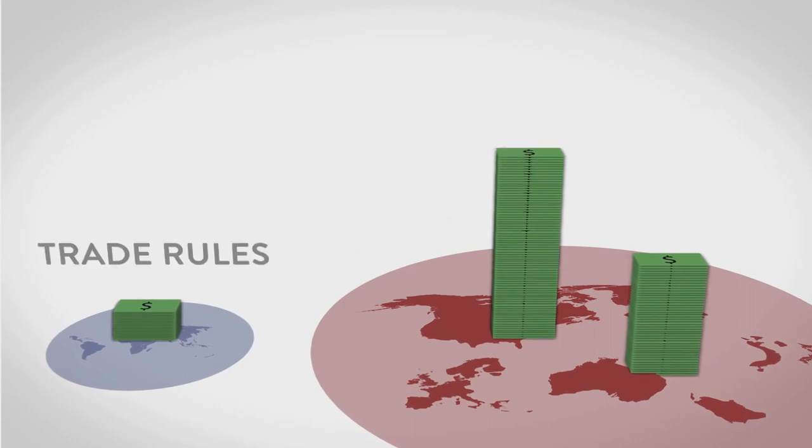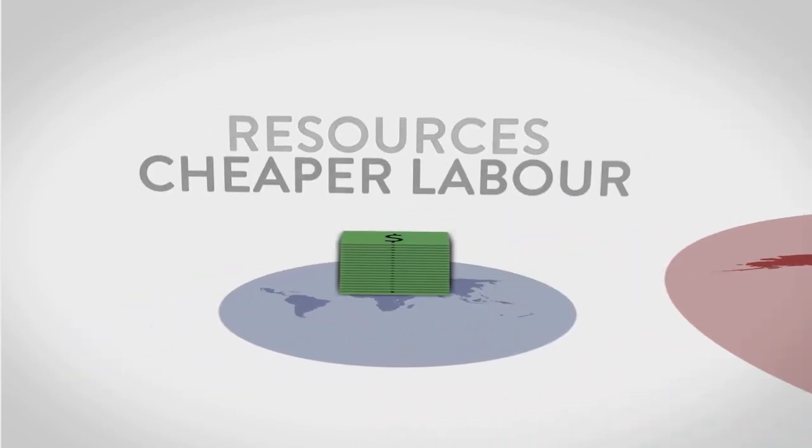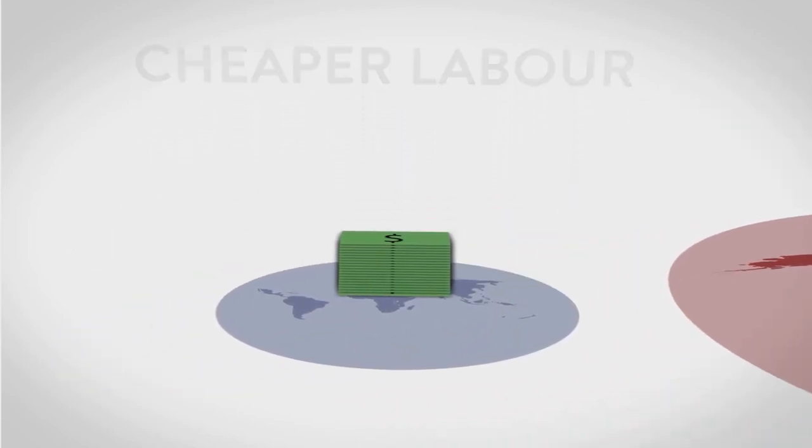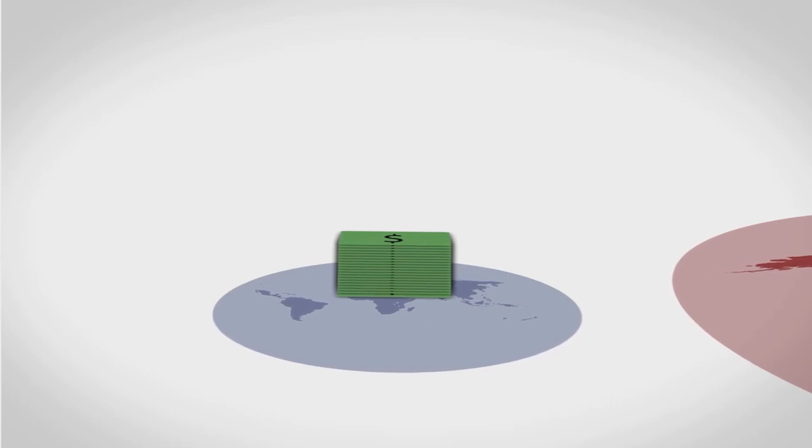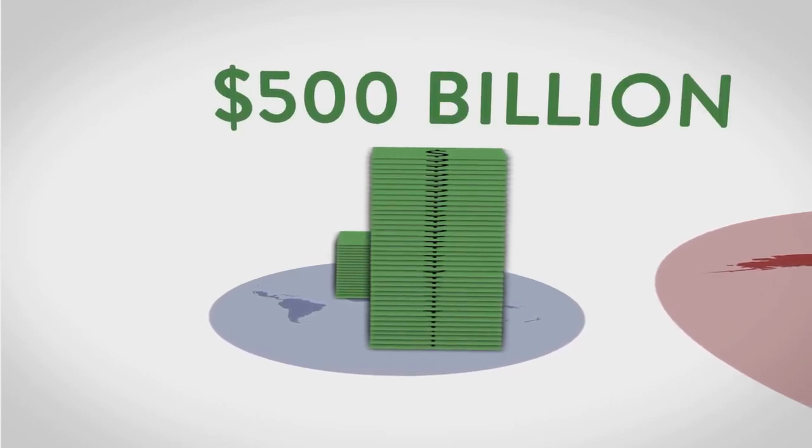And then there's the money that poor countries lose from trade rules imposed by rich countries to get access to more resources and cheaper labor. Economists from the University of Massachusetts calculate that this costs poor countries about $500 billion a year.